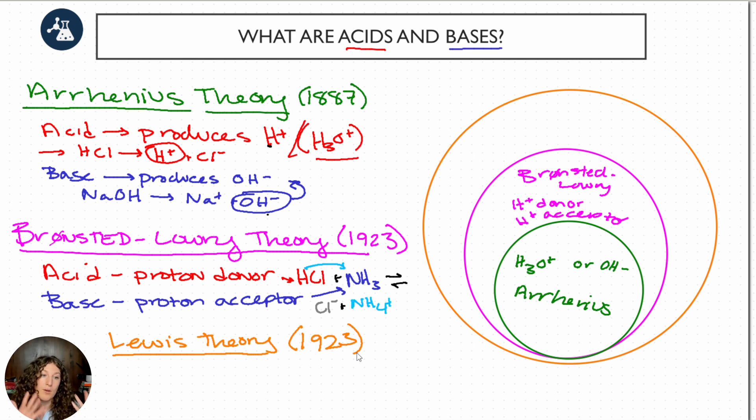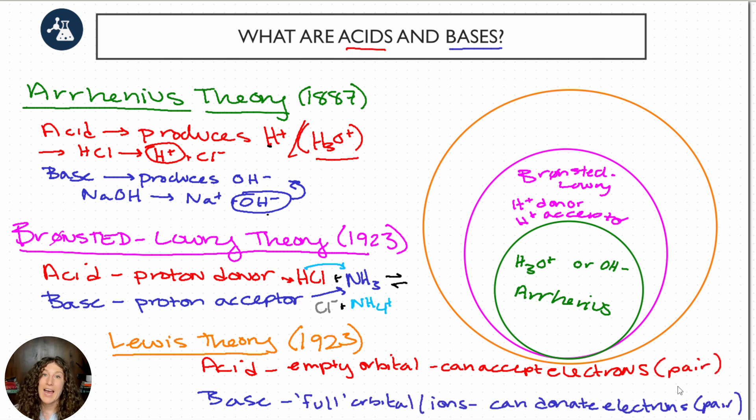He came up with the Lewis theory, which is focused instead of on protons, which is restricted to hydrogen ions, is focused more on just electron orbitals. So for the Lewis theory, it's a nice broad theory that can apply to any species where a Lewis acid has an empty electronic orbital. And that means that if we have an empty orbital, if we recall our atomic chemistry, that means we're ready to accept electrons in a bond. We can say, yep, come on over, we'd love some electrons please. That's what makes it a Lewis acid. A Lewis base is the species that has basically extra electrons that it would be happy to donate.